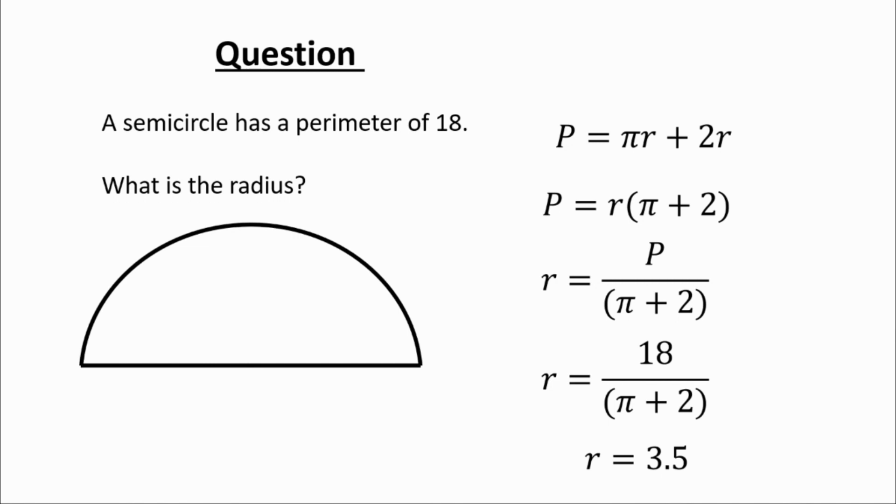And so that is how you can simply find the radius of a semicircle knowing only its perimeter. So I hope this video was helpful. If it was please like and subscribe below for more and finally thank you very much for watching.